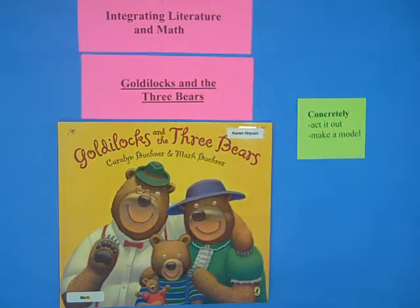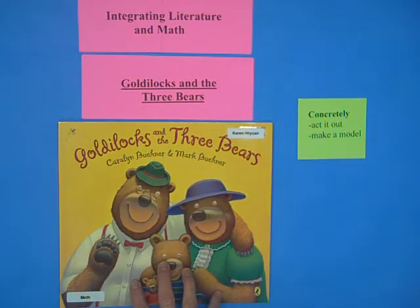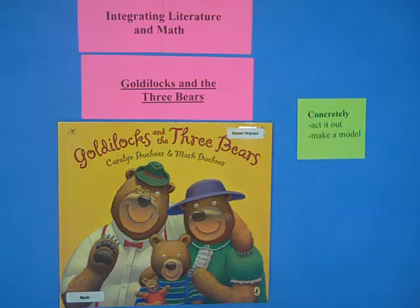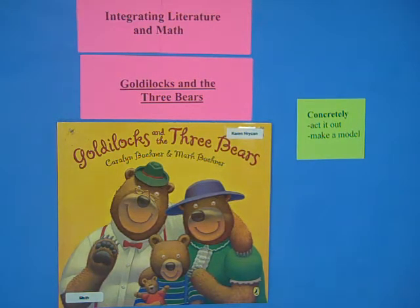This is an integrated literature and math lesson, which probably could last for about a week or two. We're going to start off with Goldilocks and the Three Bears. What you would do is start with a language arts lesson, reading the book several times, asking explicit questions, making connections, and using background knowledge.